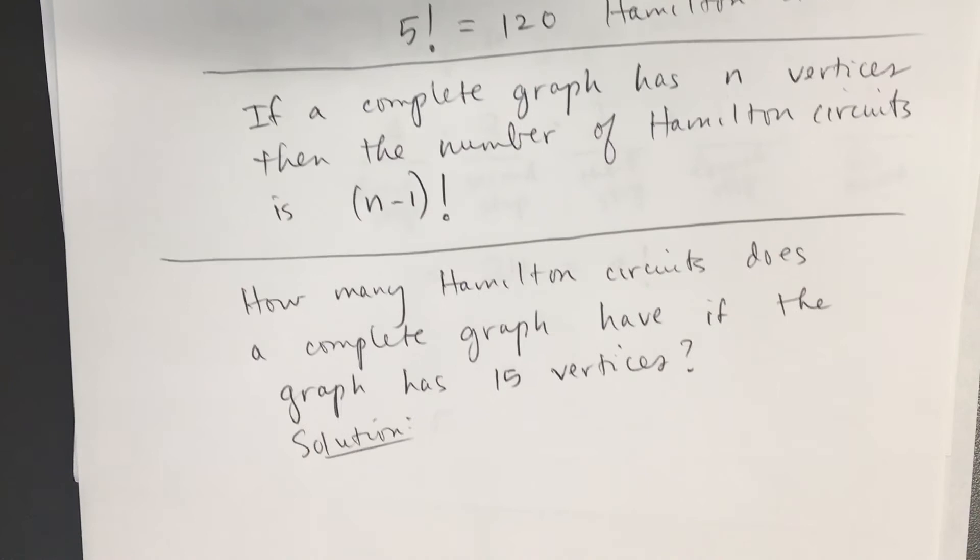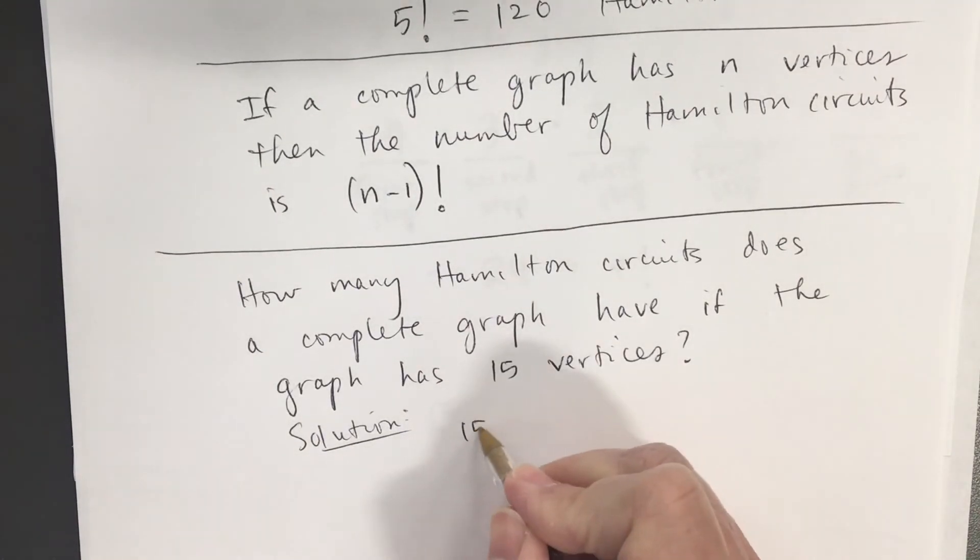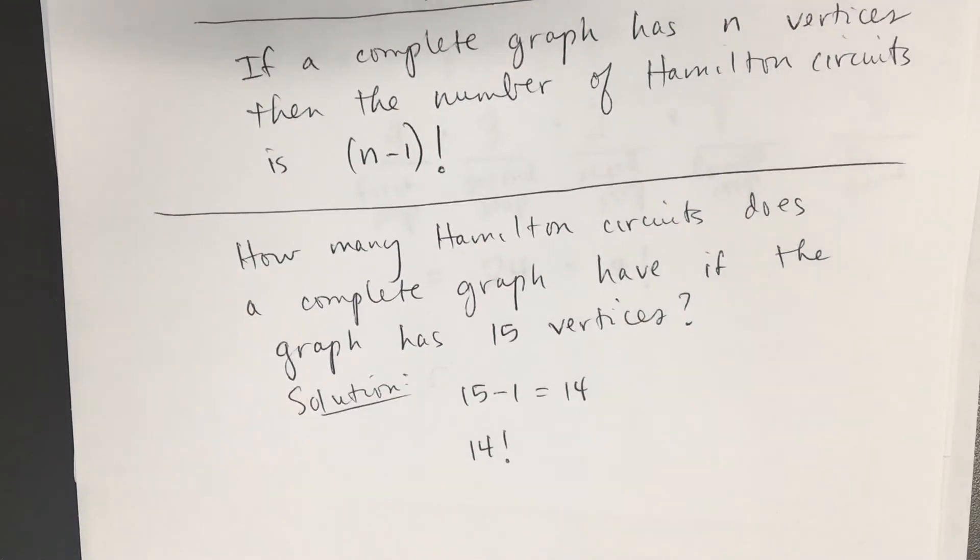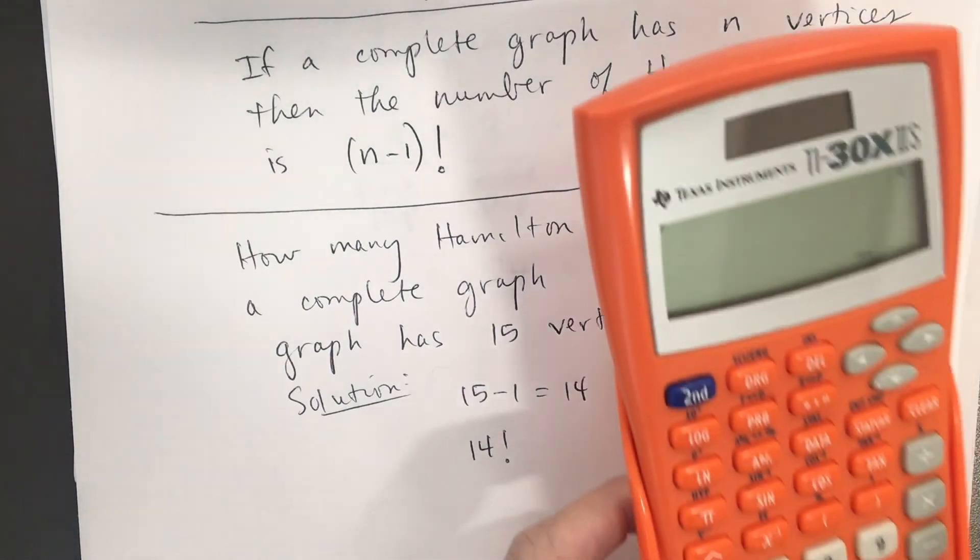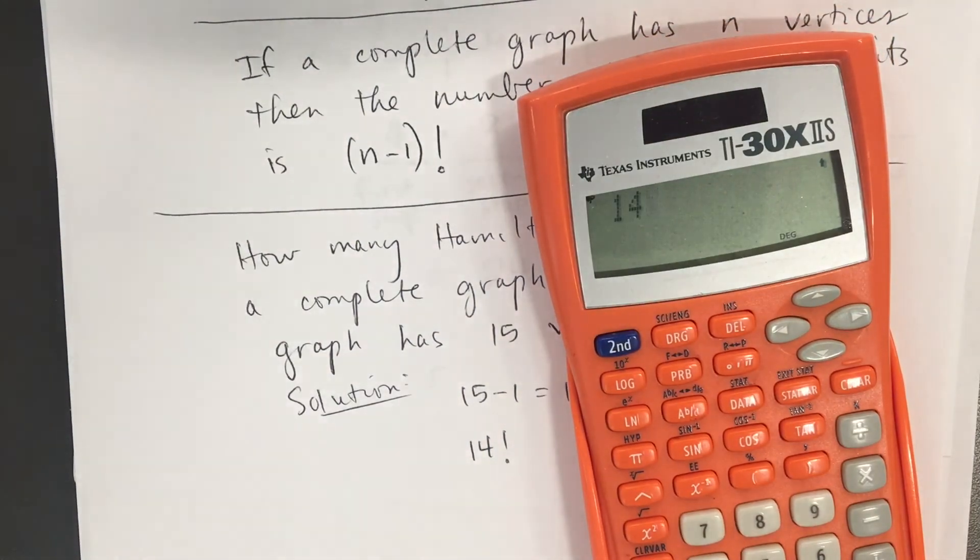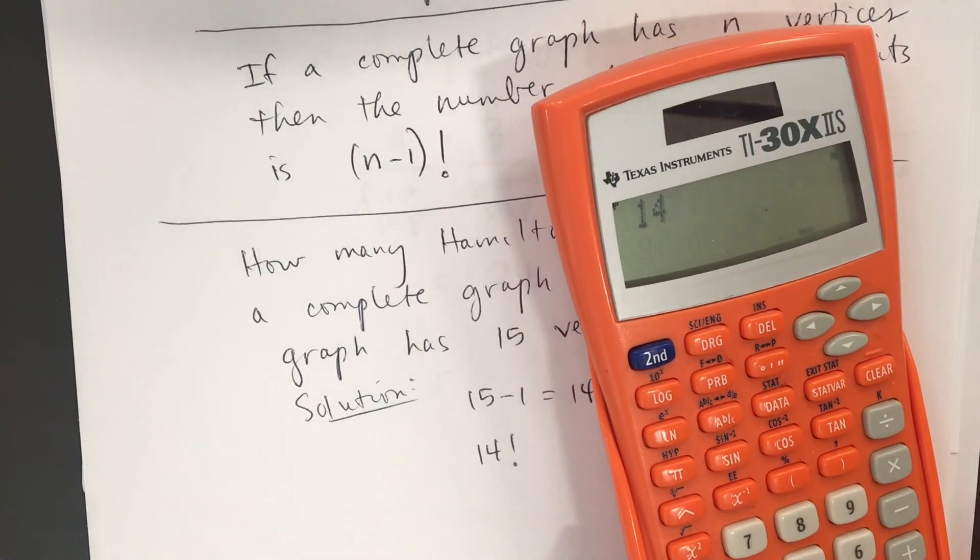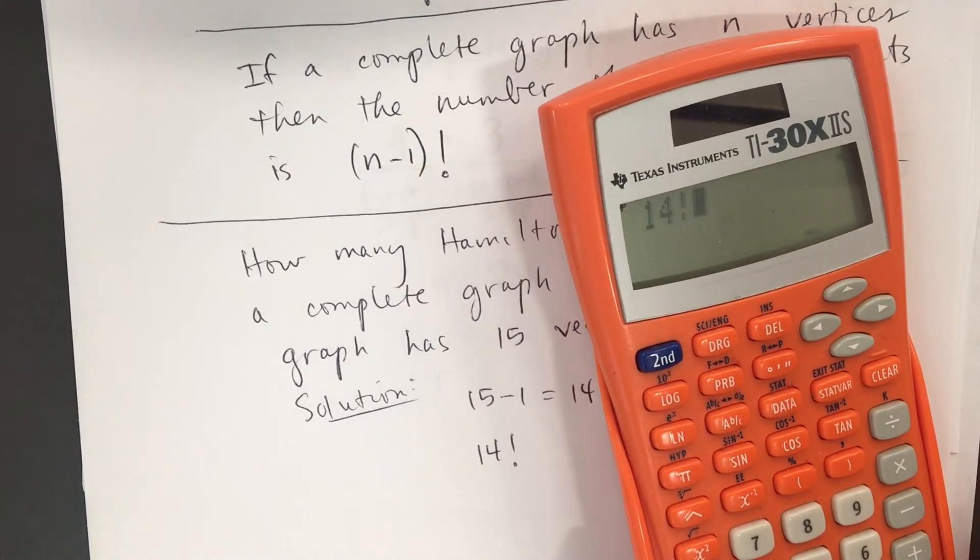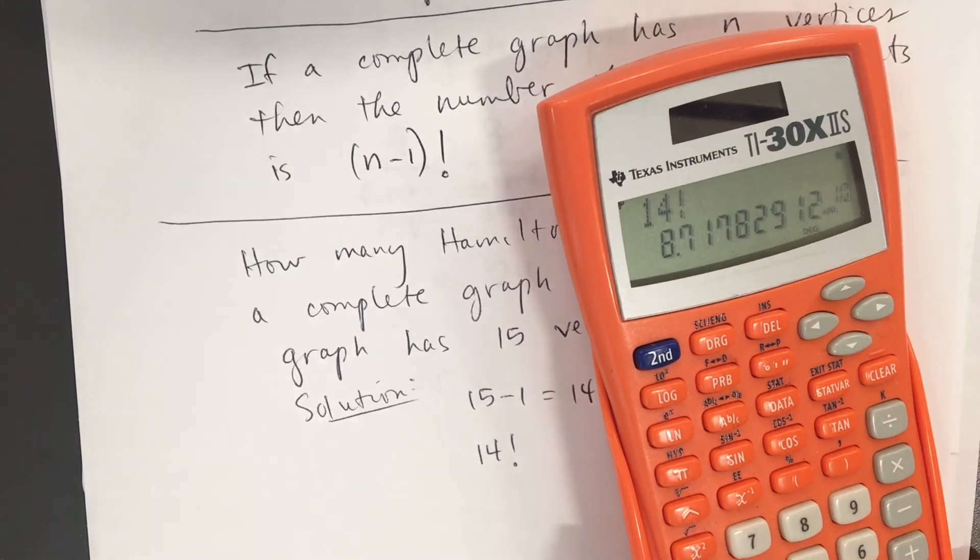What do we do on that problem? For the solution, 15 minus 1 is 14. So, the answer is 14 factorial. If I put that in my calculator, well, I'm going to get a number in scientific notation. 14, press the PRB key. I'll scroll to the factorial, underline the factorial. Press equals. Press equals again. And I've got scientific notation.